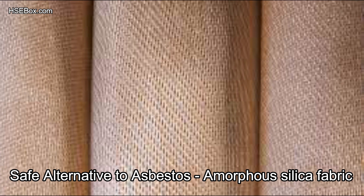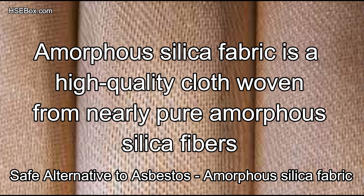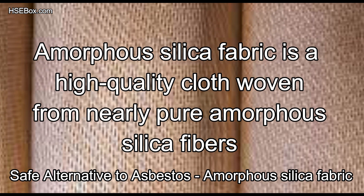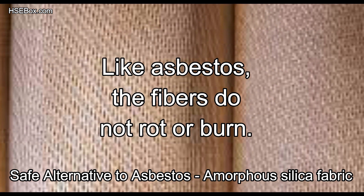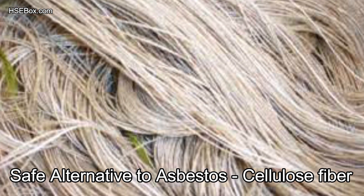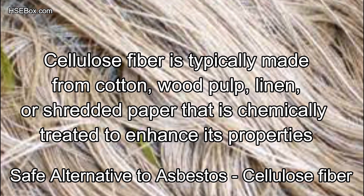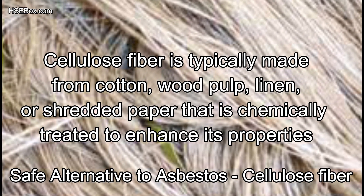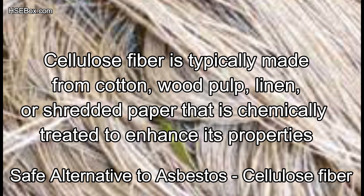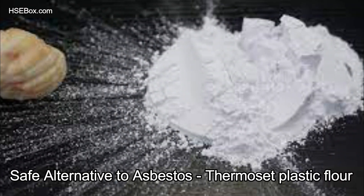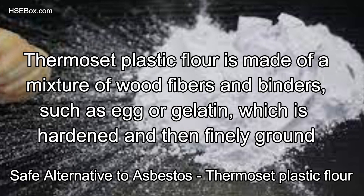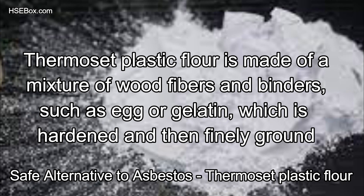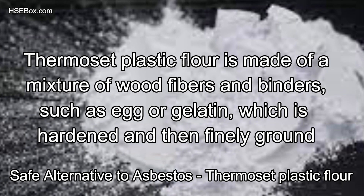Another alternative is a high-quality cloth woven from nearly pure amorphous silica fibers; like asbestos, the fibers do not rot or burn. Cellulose fiber is typically made from cotton, wood pulp, linen, or shredded paper that is chemically treated to enhance its properties. Thermoset plastic flour is made of a mixture of wood fibers and binders such as egg or gelatin, which is hardened and then finely ground.